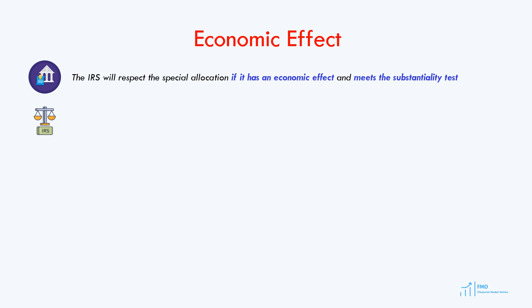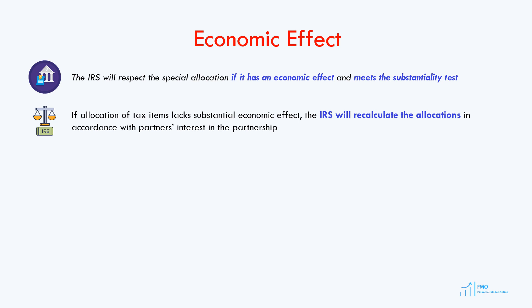What happens if the allocations lack the economic effect? In that case, the IRS will recalculate the allocations of the tax items according to the partner's interest in the partnership. This would be detrimental to the tax equity returns, because recalculation of the allocations means less losses and tax credits to the tax equity partner.